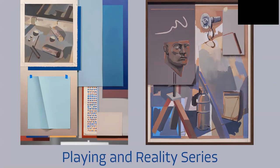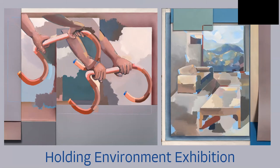One of his most recent exhibitions is called The Holding Environment, and it continues John's desire to push at the boundaries separating painting and photography. Based on the idea of a safe, supportive space in relational psychoanalysis, these pieces have a personal significance that remains in its safe space or holding environment, and that significance isn't shared easily. These pieces and this concept also draw back to the series where he used items as representations of childhood.